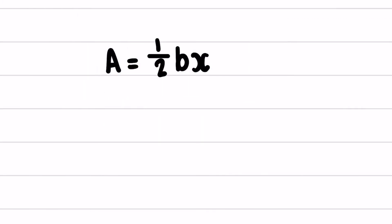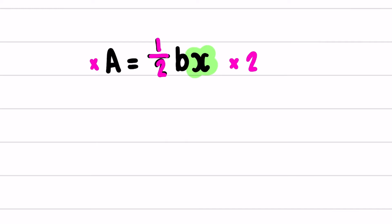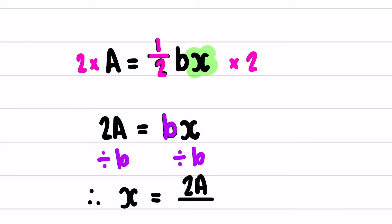Looking at a equals a half times bx, I want to isolate x. To get rid of the half, I multiply by 2, because a half times 2 is 1. What I do to one side I do to the other, giving me 2a equal to bx. I still want to get x by itself, so I get rid of the b by dividing both sides by b. Therefore x equals 2a over b.